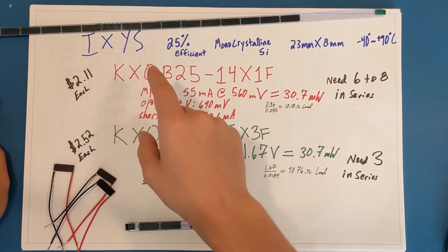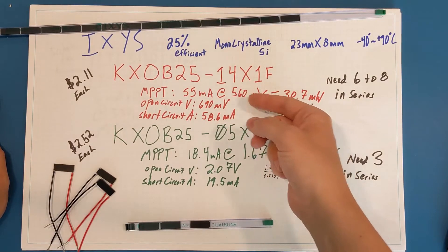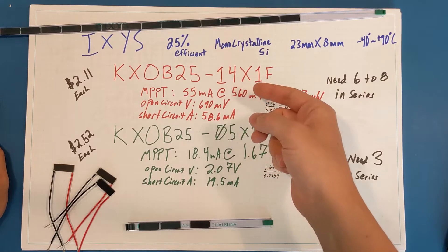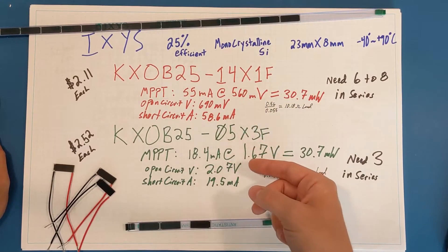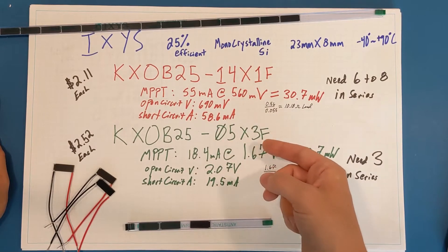Here I have two different types of IXYS solar cells. The first is the lower voltage but higher milliamp output cell, the 14X1F, and the second is the higher voltage but lower milliamp output, the 05X3F.